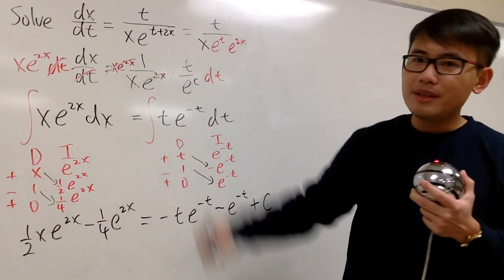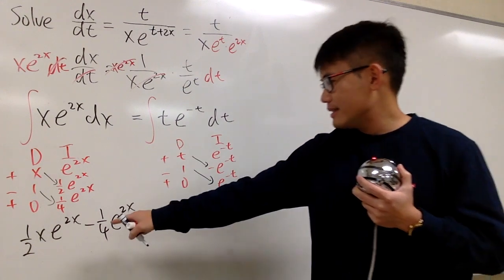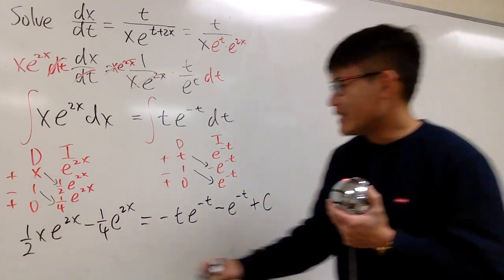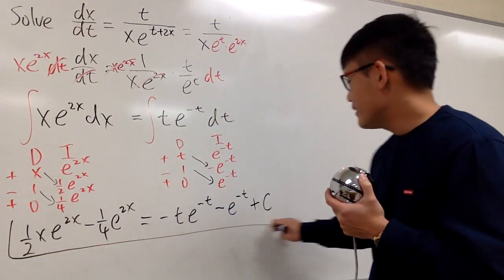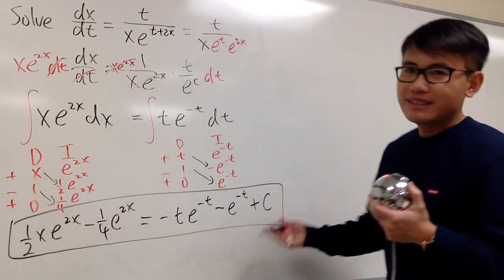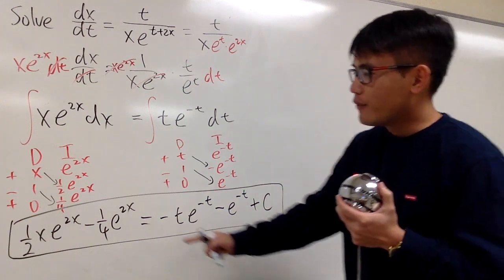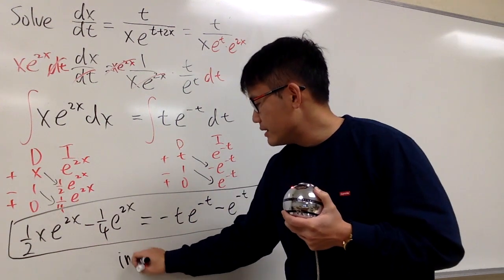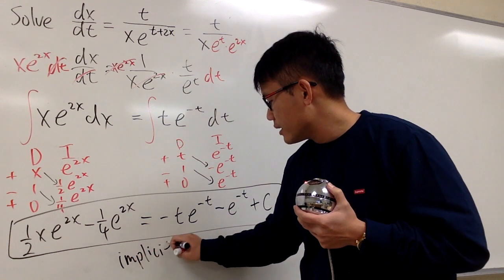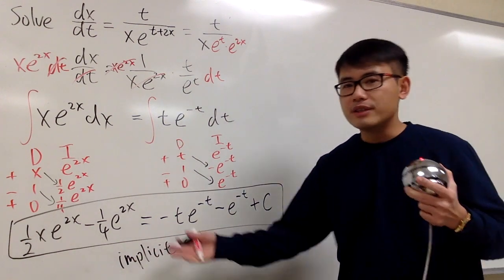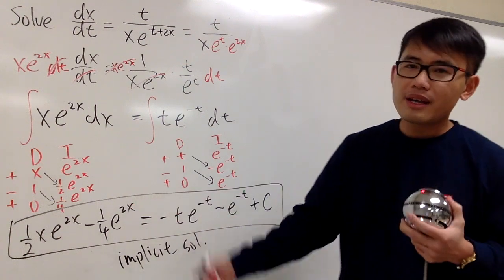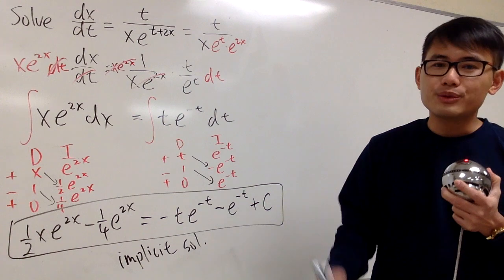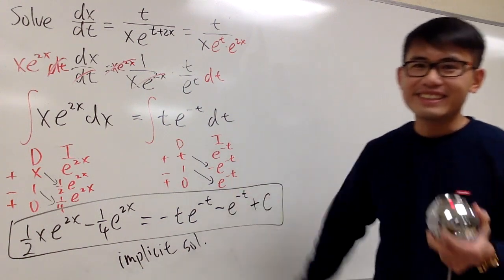x is the dependent variable, and t was the independent variable. There's nearly no way to isolate the x, so we will leave the answer right here. This is it. And when you cannot solve for the dependent variable, this is called the implicit solution. Sometimes if you can solve for x, you can solve for y. If you can solve for the dependent variable, that's called the explicit solution. But this is called the implicit solution. And this is it.